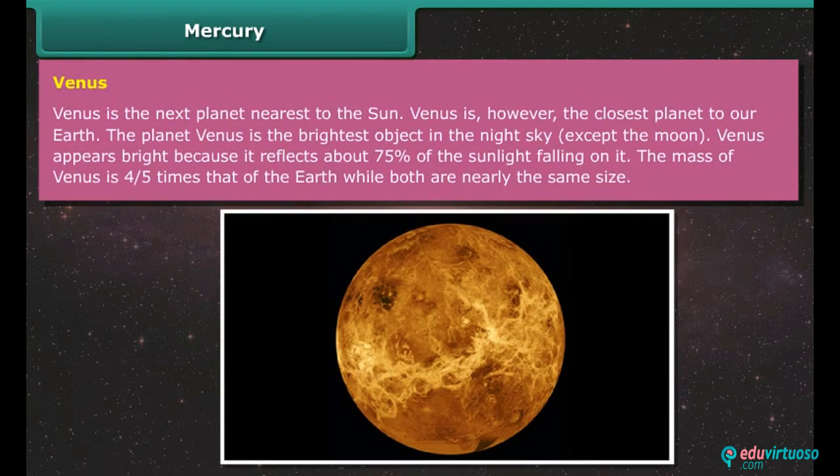Venus. Venus is the next planet nearest to the sun. Venus is however the closest planet to the earth. The planet Venus is the brightest object in the night sky except the moon. Venus appears bright because it reflects about 75% of the sunlight falling on it. The mass of Venus is 4/5 times that of the earth, while both are nearly the same size.